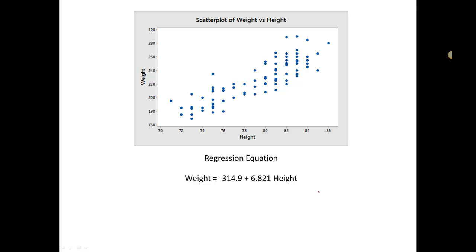So if I happen to run into an NBA basketball player at my next party, I can ask him how tall he is. And suppose he tells me that he is 84 inches tall. Well, I could use my regression equation to predict how much he would weigh. So to do that, all I have to do is take 84 and plug it in for height in my equation. So if I take negative 314.9 plus 6.821 times 84, that equals 258.064. So for an NBA player who is 84 inches tall, we would predict that his weight would be 258.064.